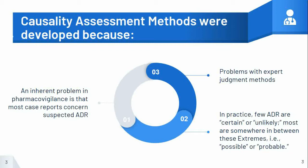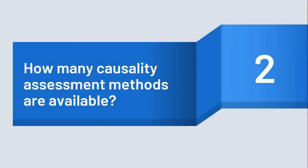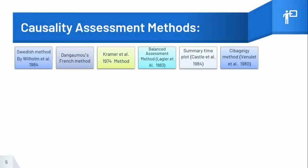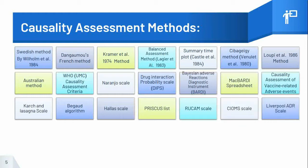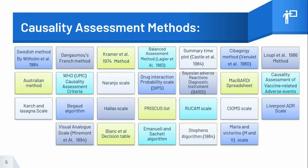In an attempt to solve these problems, many systems have been developed for structured and harmonized assessment of causality. There are many causality assessment methods available; you can see the names of all these methods on the screen, and the list is not limited to what is shown. Different causality categories are adopted in each method, and the categories are assessed using different criteria. Each causality assessment method has its advantages and disadvantages. Unfortunately, no single method is universally accepted because of poor reproducibility and validity.